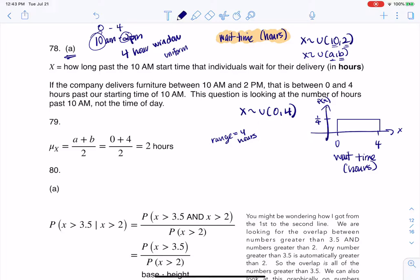Now 79 says what's the average wait time? Well, we learned that formula in chapter 5 that when you have a uniform distribution, the average is A plus B over 2. And in this case, that's 0 plus 4 over 2, which is 2 hours. And like always, this is not a coincidence. This always happens. Your mean is always right there in the middle of your rectangle.